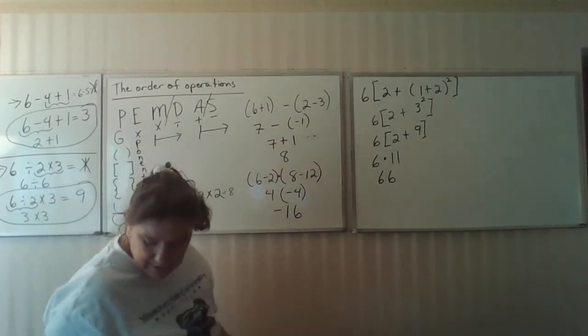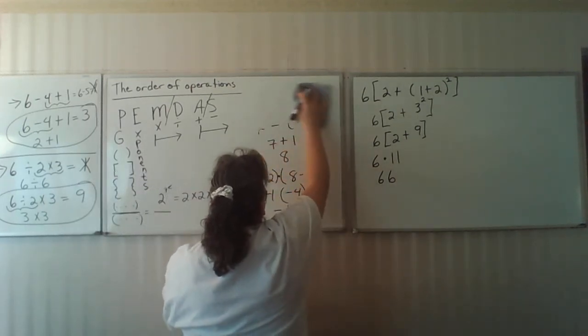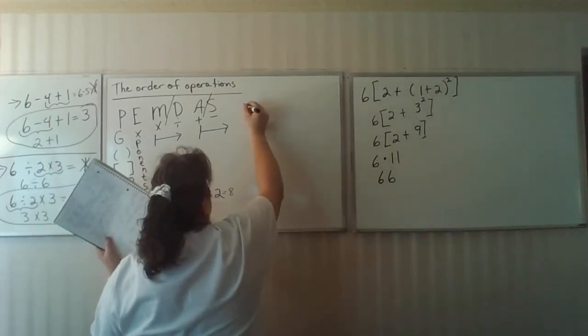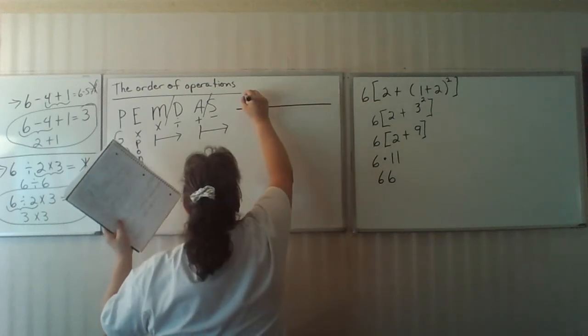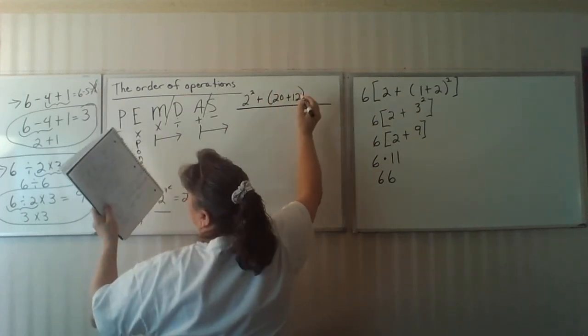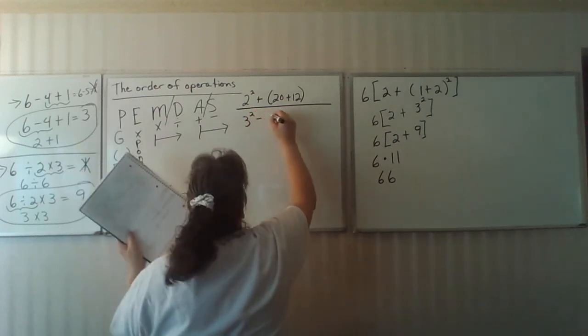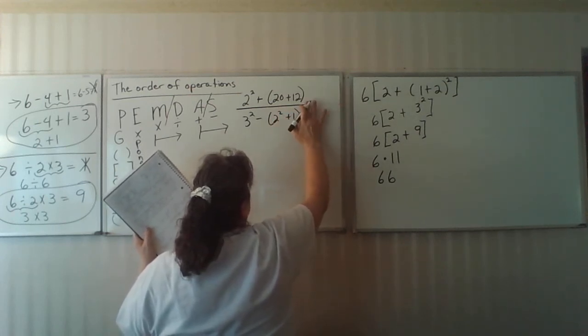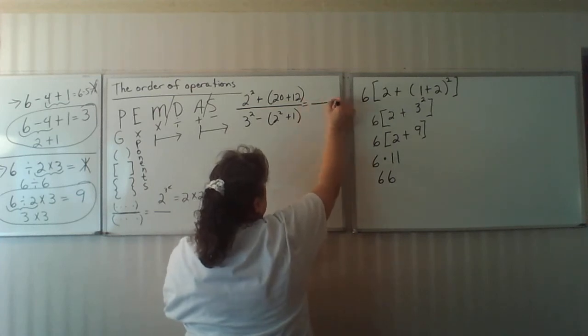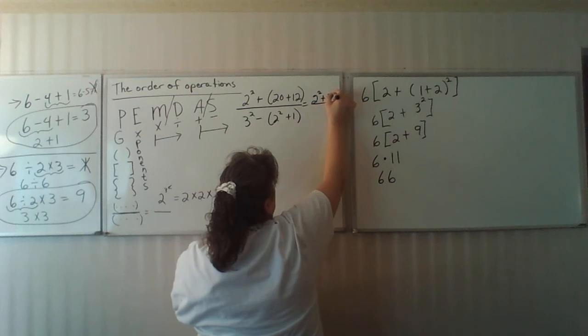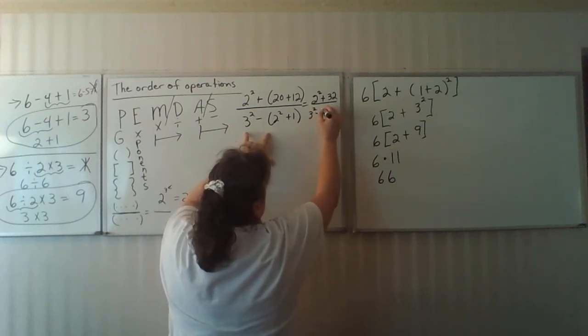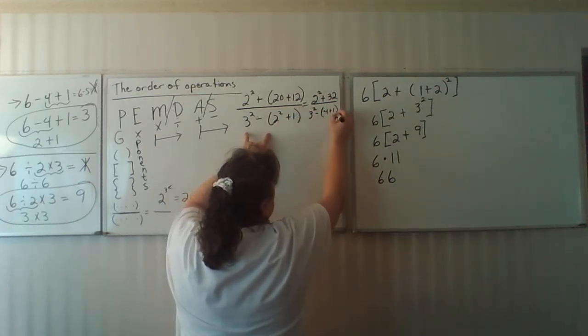Now let's look at one more. This one is going to use this last grouping symbol that I introduced you to down there. So let's look at it. 2 squared plus 20 plus 12 over 3 squared minus 2 squared plus 1. Well we're going to have to start at the top work on the inside first. So I have 2 squared plus 32 because 20 plus 12 is 32. Down here, I've got my 3 squared minus, well, 2 squared on the inside is 4, so that's 4 plus 1.